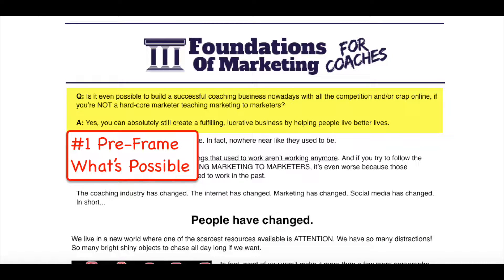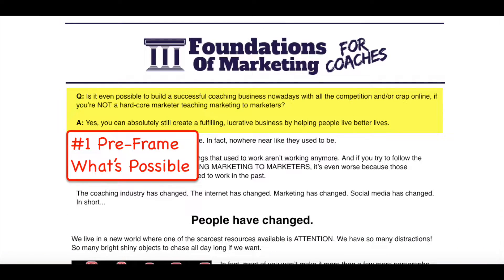So what I'm going to do is show you some screenshots of a sales page that I have for a marketing program called the Foundations of Marketing for Coaches. That way you have some context. The first element is to pre-frame what's possible. What that means is you start the conversation on a high note. You start talking about what's possible. In this case, I actually formed it as a question: is it even possible to build a successful coaching business nowadays with all the competition and stuff online? Framing it as a question like that plants the seed that the prospect might not believe that it's possible anymore, especially with the condition that I mentioned if you're not a hardcore marketer teaching marketing to marketers.